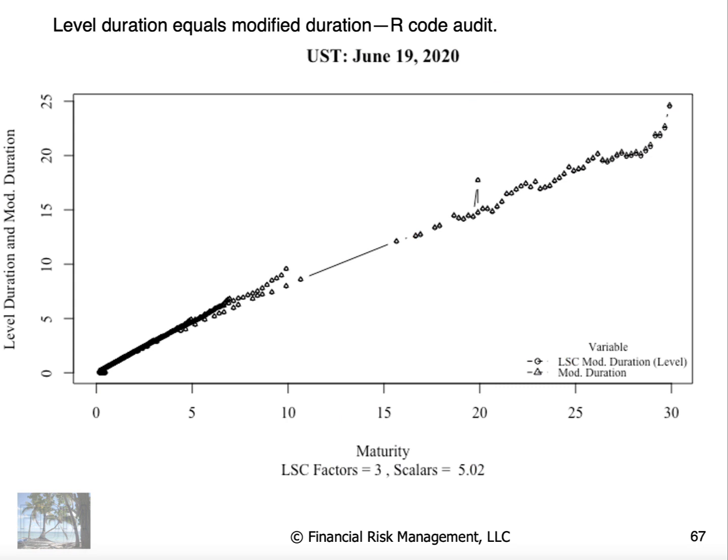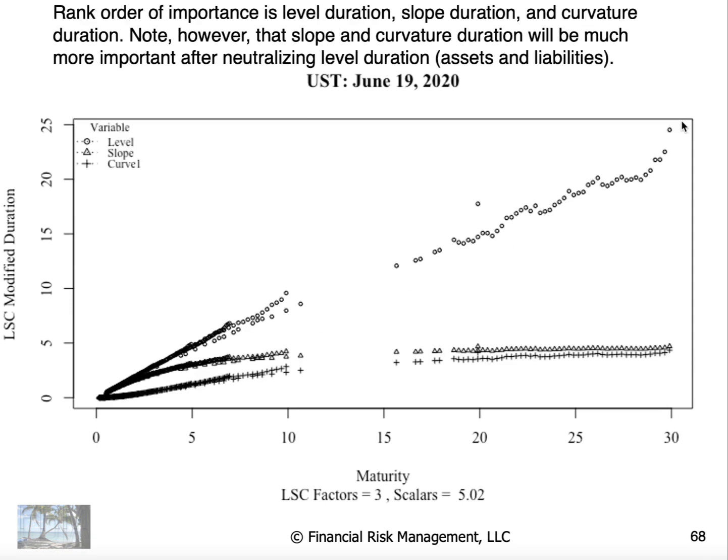And we can actually model this out. Level duration and modified duration are exactly the same thing. Therefore, you can't distinguish them on this chart. If we look at modified durations for level, slope, and curvature, we see that we get different values depending on the particular bonds that we're analyzing. But level duration is a much more significantly higher number. Slope and curvature are similar, but they are distinctly different.